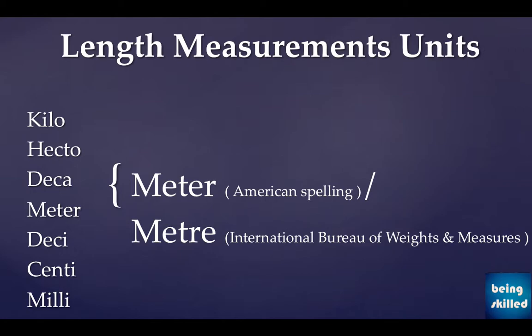We have two spellings of meter. The first is M-E-T-E-R, which is the American spelling, while M-E-T-R-E is the international spelling, which is standard throughout the world and is used by the International Bureau of Weights and Measures.